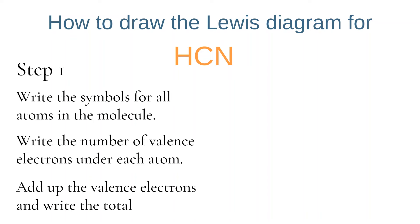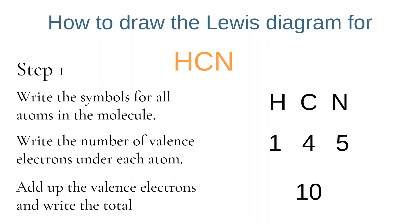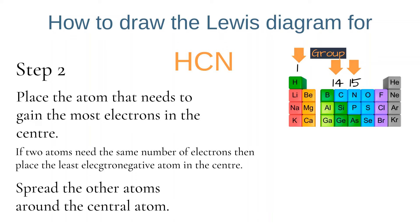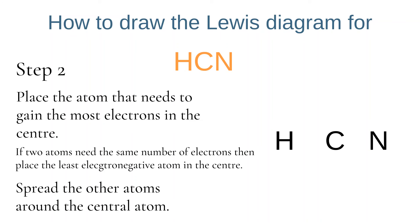For our final example, we're going to look at the Lewis diagram for HCN. We start by writing the symbols for each atom and placing the number of valence electrons underneath. There is a total of 10 valence electrons to include. Hydrogen is in group 1 but is an exception — it only needs one more electron to be stable. Carbon is in group 14 and needs four electrons to be stable. Nitrogen is in group 15 and needs three more. Therefore carbon becomes our central atom, and we spread hydrogen and nitrogen evenly around it.